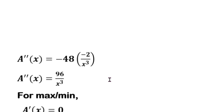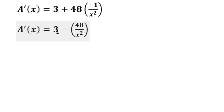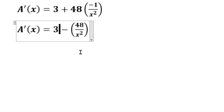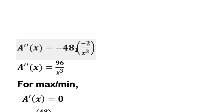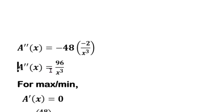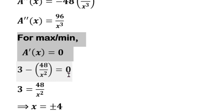Now for the second derivative A''(x): the constant 3 gives 0, and differentiating minus 48·(1/x²) gives minus 48 times minus 2 by x cubed, which equals 96 by x cubed. For maximum or minimum, the first derivative is set equal to 0.